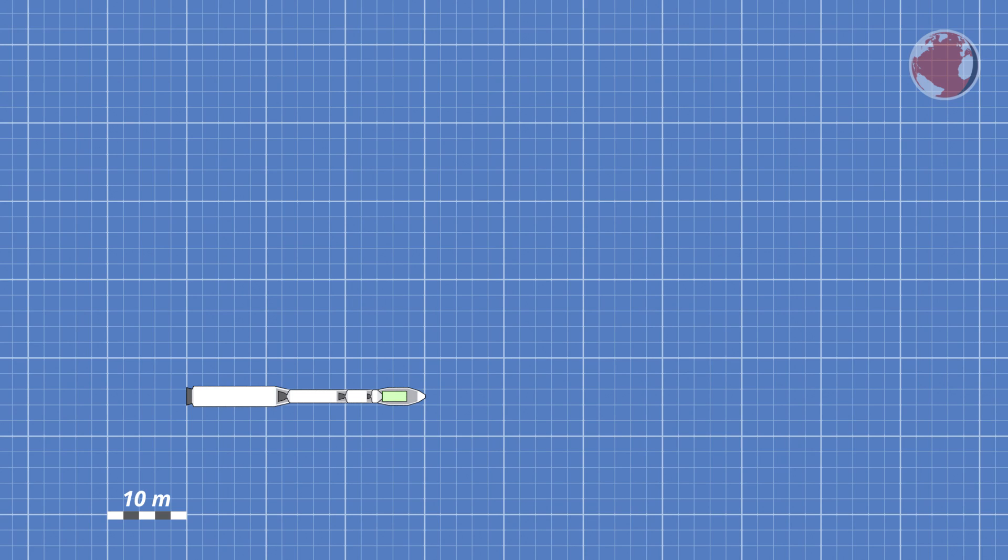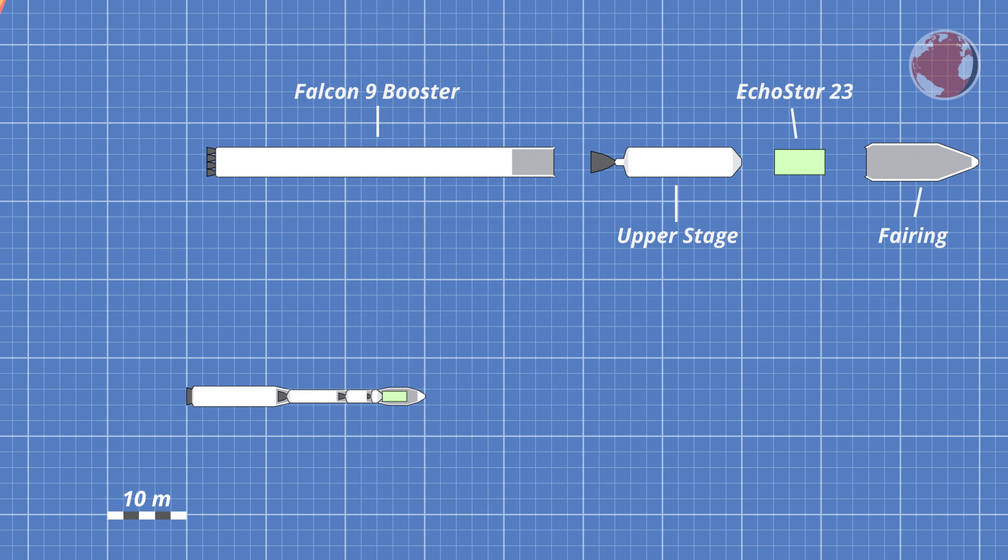This launch will be a little different because Falcon will take off in its expendable setup. Its payload Echo Star 23 is on the edge mass-wise of what a reusable Falcon 9 can shoot into a geosynchronous transfer orbit.